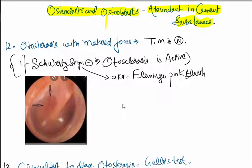Otosclerosis with mature focus - the TM is normal. If Schwartz sign is positive, it means otosclerosis is active. Schwartz sign, also known as flamingo pink sign, shows hypervascularity seen near the promontory. Please do not do any operation here.